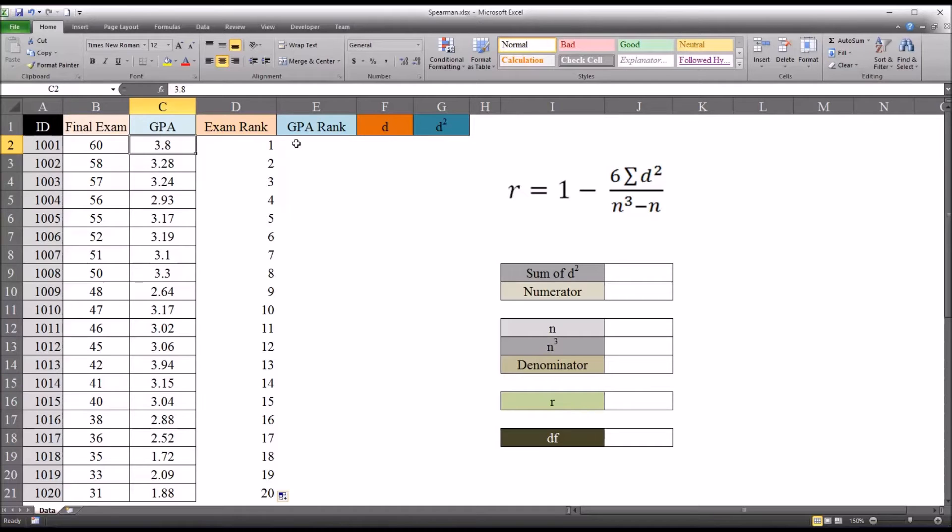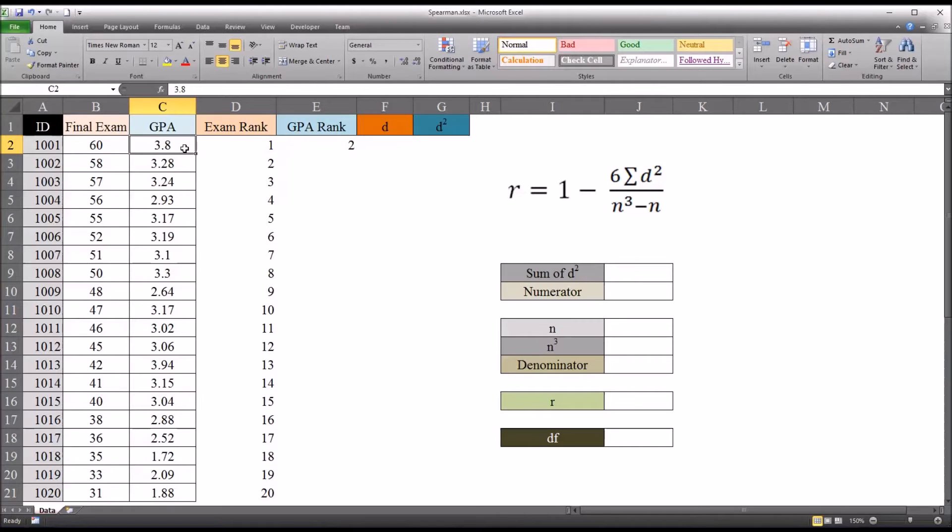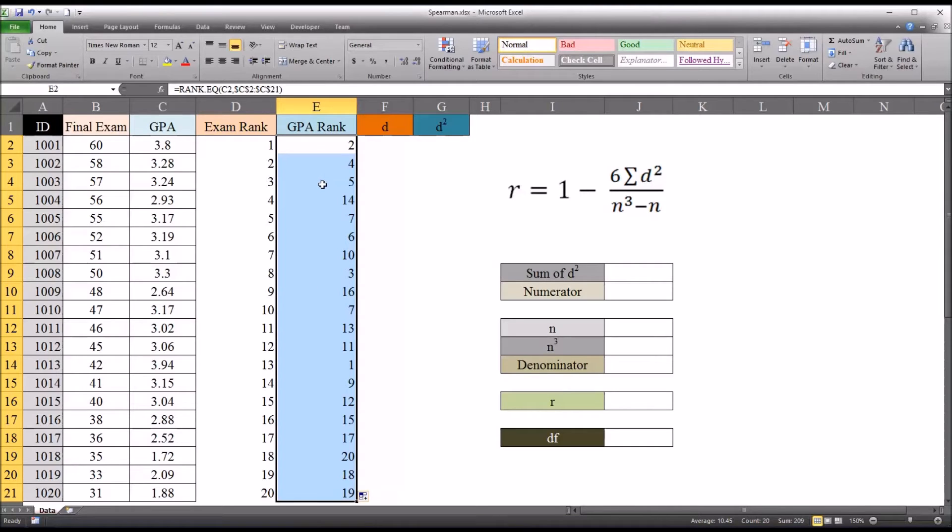So these are the corresponding ranks for the final exam. Now GPA will use a function to calculate the rank, and it will be equals sign rank.eq. And the first argument it's looking for is the number. In this case, the contents of cell C2, GPA 3.8, and then the range. We want to evaluate that number against, which is the range of all the GPAs. And I want to make sure I go in here and hit function 4, F4, to make that range absolute. And we can see that the GPA ranks 2. So there is a GPA higher than 3.8. You can see it's down here, it's 3.94. But here we can just autofill these ranks down. So now we have the exam rank and the GPA rank.